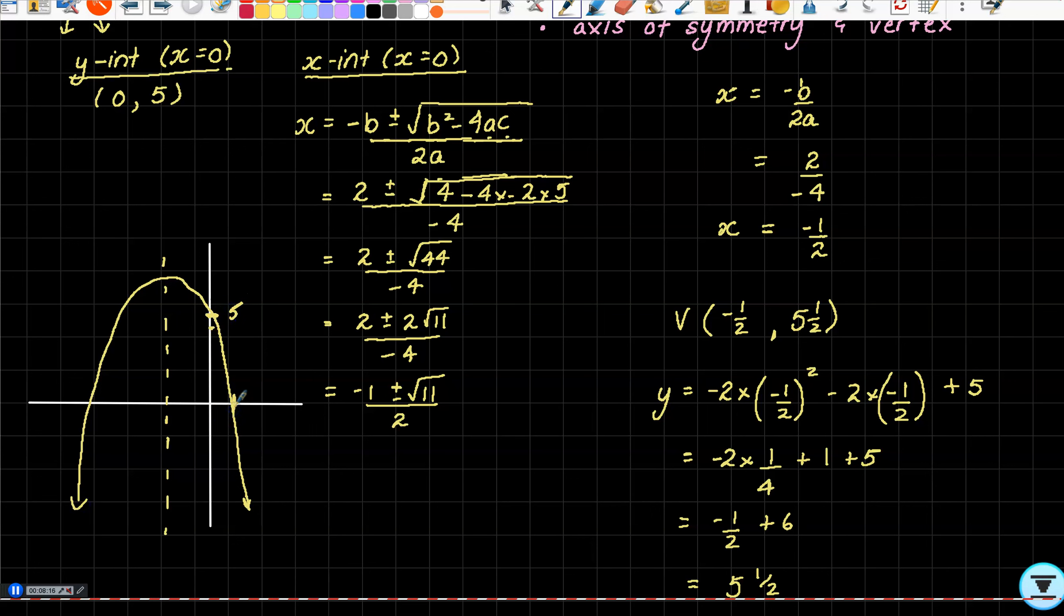I'm going to sketch because we know it's concave. Now I can say okay, that's my 5, this would be my (-1 + √11)/2, this will be my (-1 - √11)/2. Label x = -1/2, and I can also pop my vertex here as (-1/2, 5 1/2). Does that seem right? Yes it does.